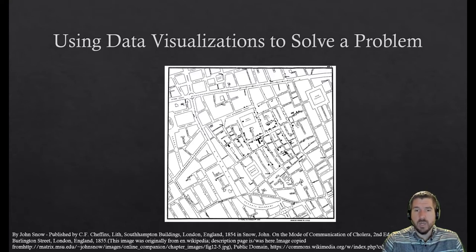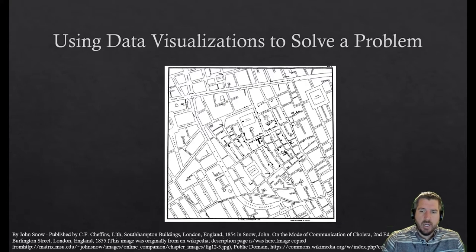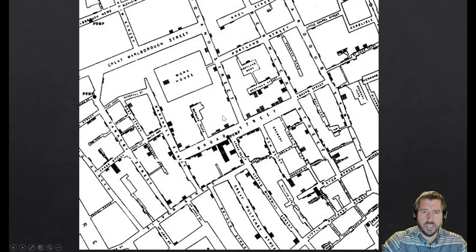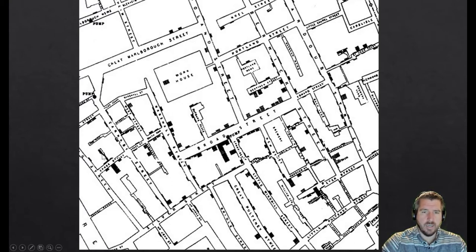John Snow thought, let me see if there's a pattern to this sickness, which was actually a very new idea at the time. He drew a map of the area where people were getting infected and drew little black lines at the homes of infected people. If we zoom in a bit, you can see many of the cases are on Broad Street, right around here, with a lot of other cases centered around that area.